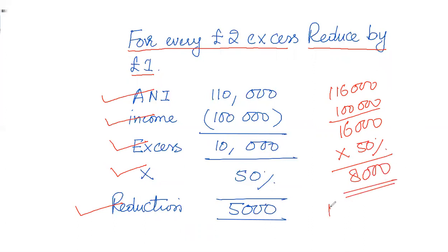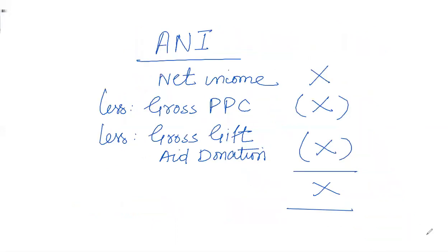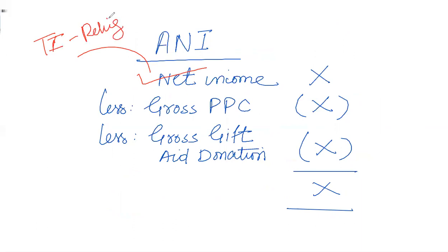The available personal allowance is £12,500. You reduce this by £8,000 and the remaining personal allowance available is £4,500. The definition of ANI is: first identify net income — which is total income minus reliefs — then deduct gross personal pension contribution (PPC) and gross gift aid donation. Both items must be gross to arrive at the ANI figure.